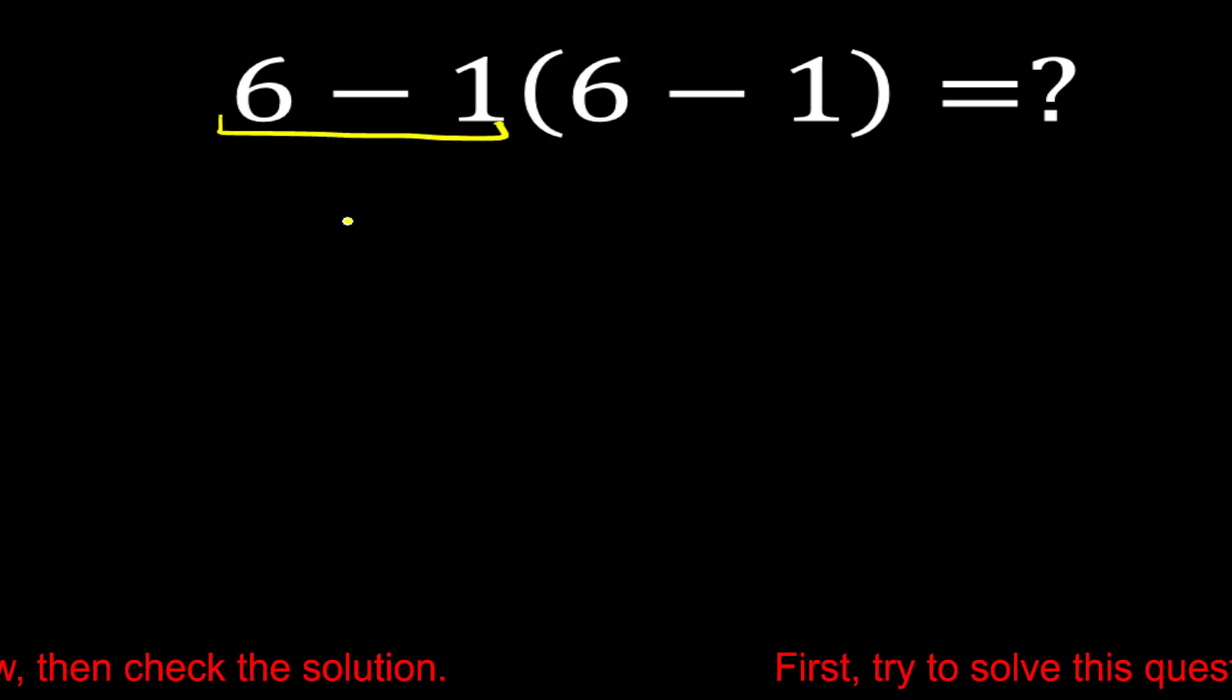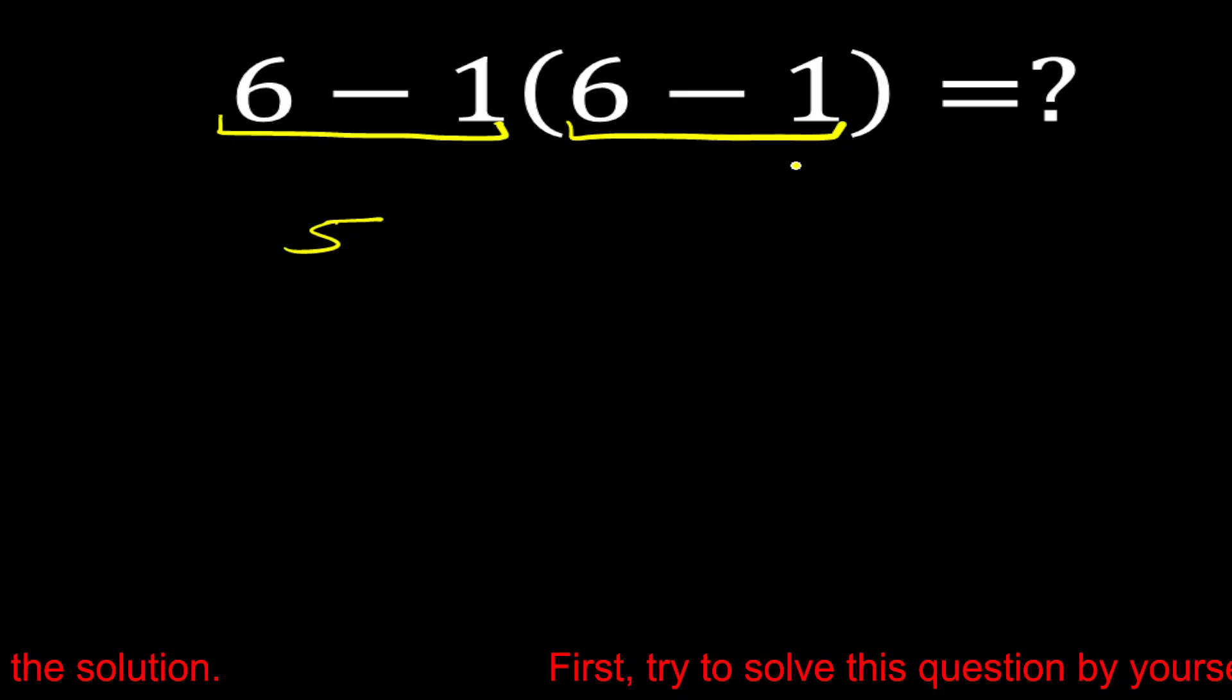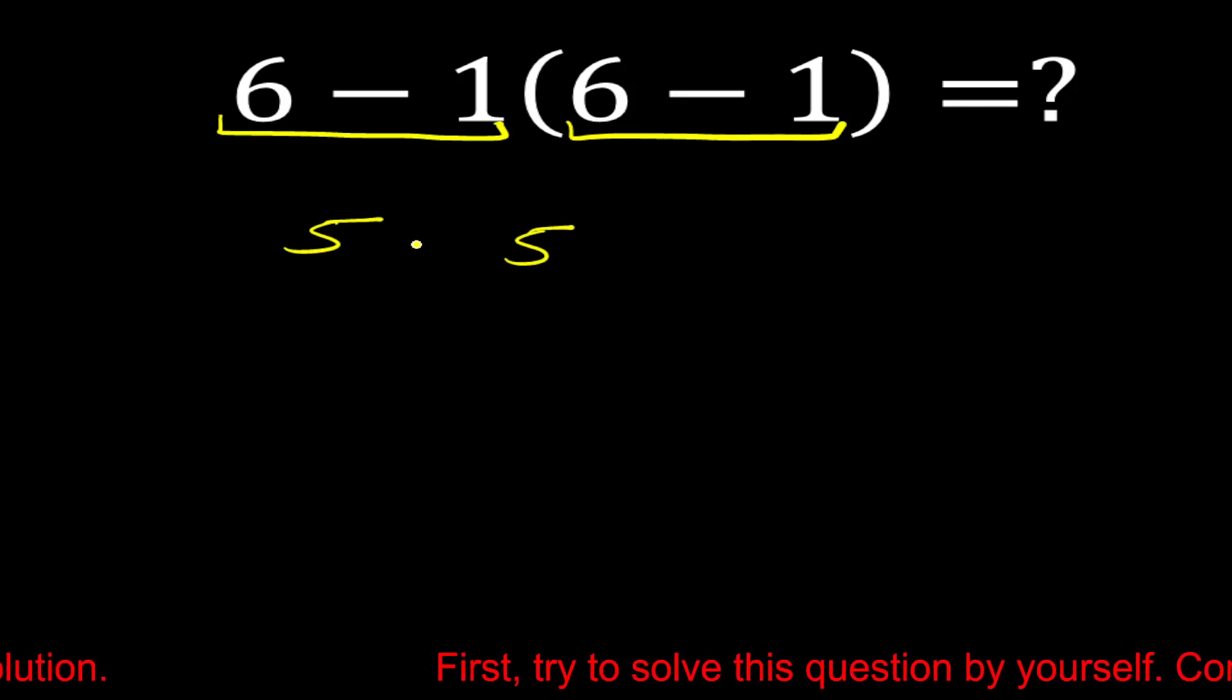So 6 minus 1 is equal to 5. Then again 6 minus 1 is equal to 5. Now 5 multiply 5 is equal to 25.